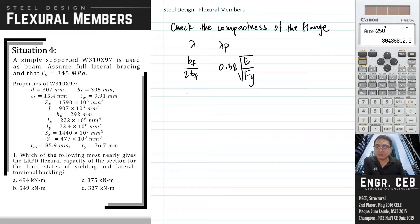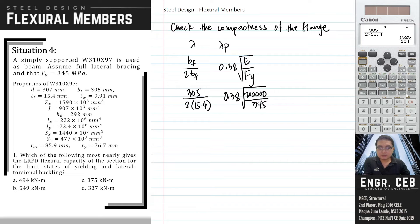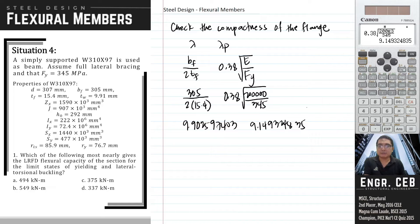Let us substitute: b_f is 305 and t_f is 15.4, and compare with lambda sub p, which is 0.38 times the square root of 200,000 over 345. Computing lambda: 305 divided by 15.4 gives 9.9026, and lambda sub p equals 9.1493. As you can see, lambda is greater than lambda sub p.